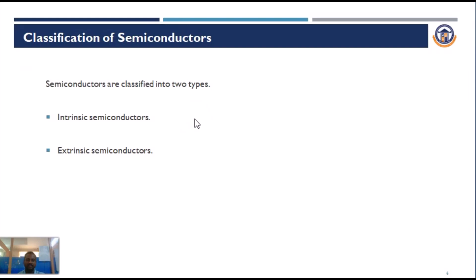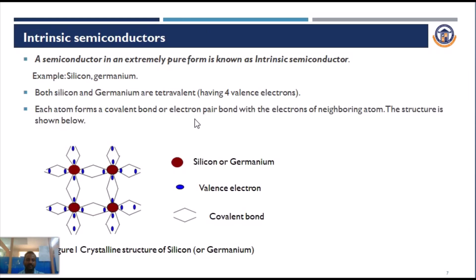Next, we look at the classification of semiconductors. Semiconductors are classified into two types: intrinsic semiconductors and extrinsic semiconductors. An intrinsic semiconductor is a pure form of semiconductor — the best examples being silicon and germanium. Both silicon and germanium are tetravalent, meaning they have four valence electrons. Each atom forms a covalent bond, or electron pair bond, with the electrons of neighboring atoms. The structure is depicted here — the brown color indicates the silicon atom, the blue color indicates the valence electrons, and the lines indicate the covalent bonds. This is the crystalline structure of silicon or germanium.